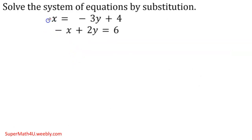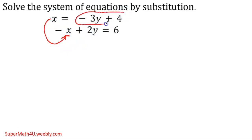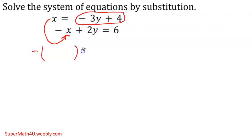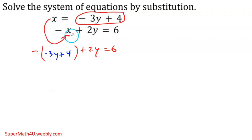Now I'm going to substitute this into the other equation. Instead of writing x, I'm going to write whatever x is equal to. Let me write the second equation: negative x — instead of the x, I put parentheses. So it's 2y equals 6, and wherever x was I write negative 3y plus 4. That's why it's called substitution — substitute into the other equation.